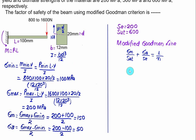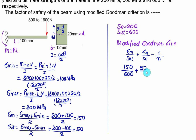Now substituting into the modified Goodman line: mean stress 150 divided by SUT 600, plus amplitude stress 50 divided by endurance limit 200, equals 1 upon factor of safety N. Solving gives the factor of safety N according to the modified Goodman line close to 2.